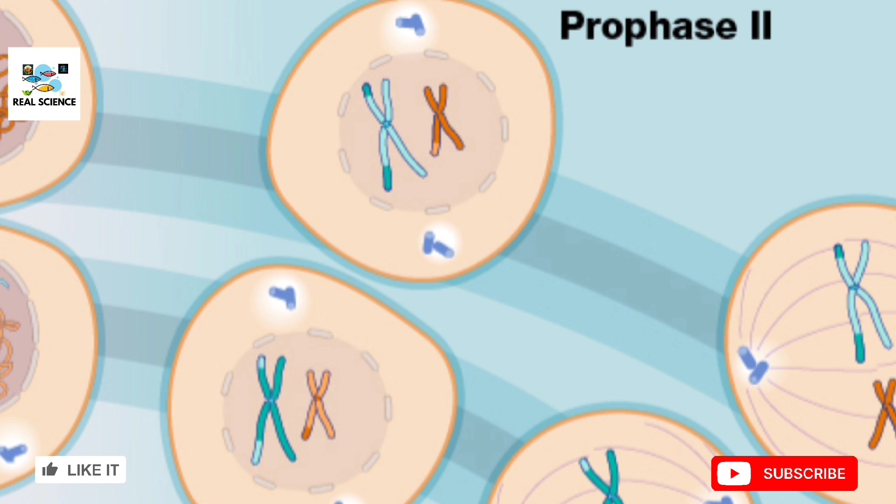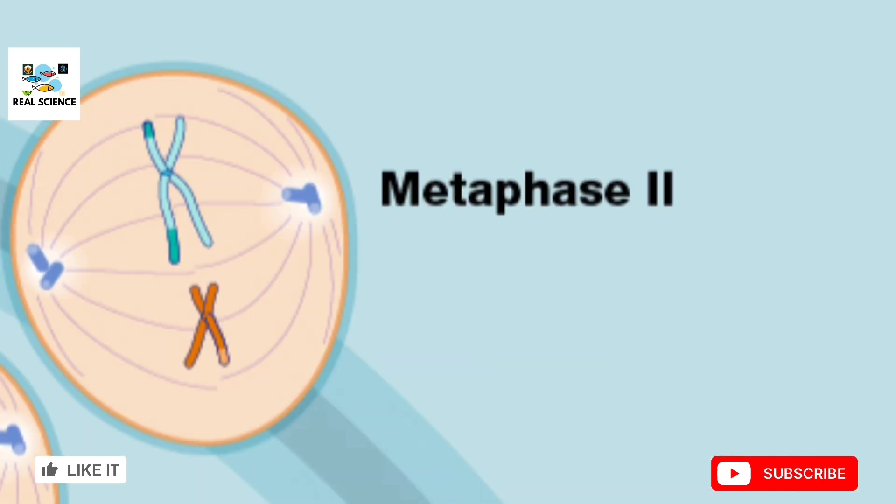The second phase of meiosis two is metaphase two. The same things happen as in mitotic metaphase — spindle fibers grow from polar bodies and attach to the kinetochore points at the centromeres of the chromosomes with their sister chromatids. The chromosomes align at the equatorial plane, just like in the metaphase of mitotic division.